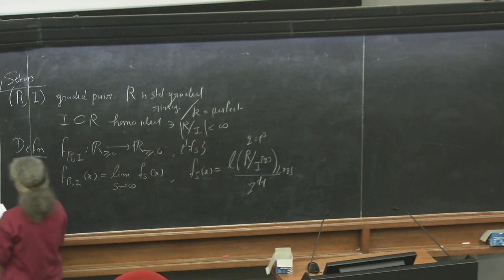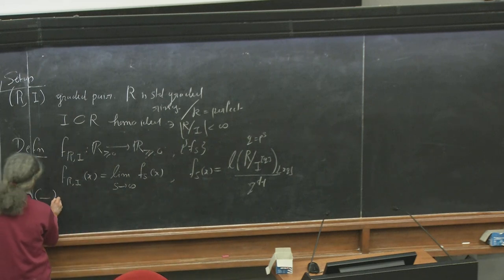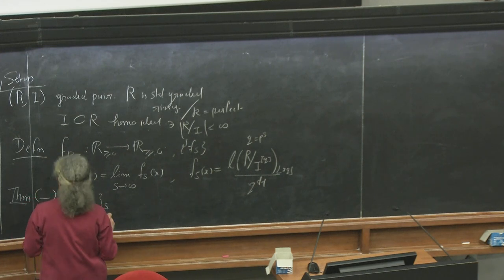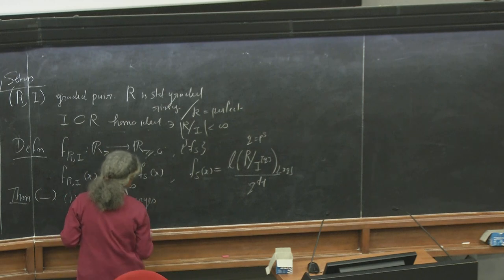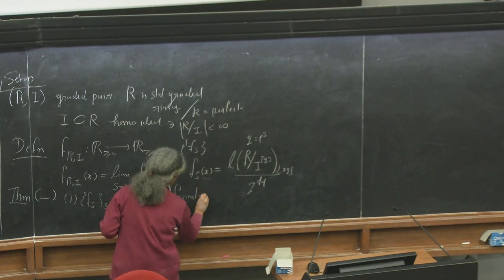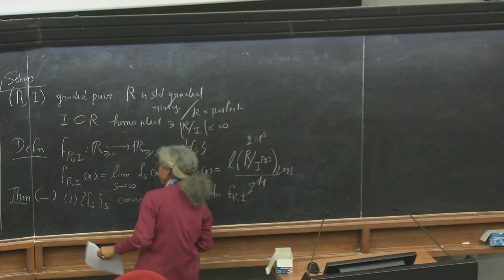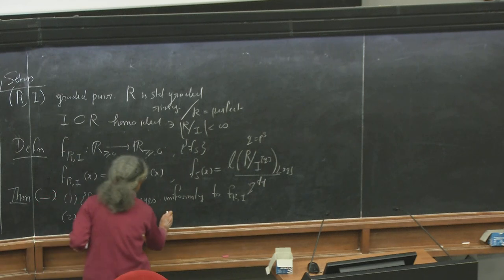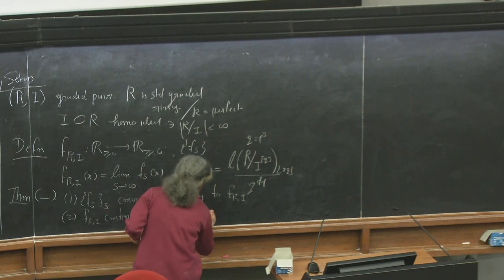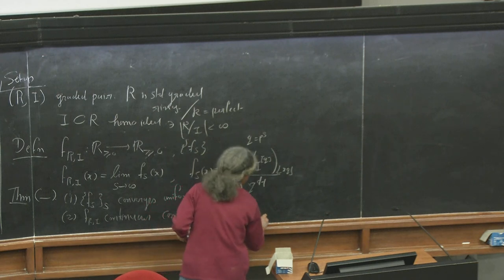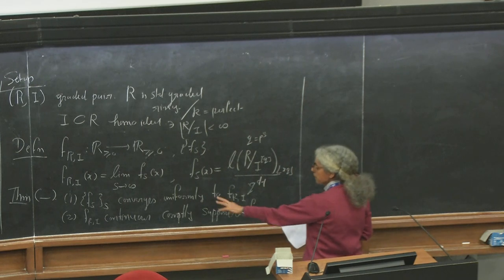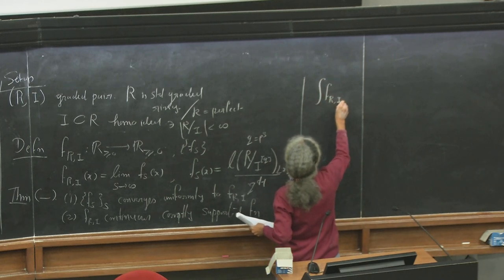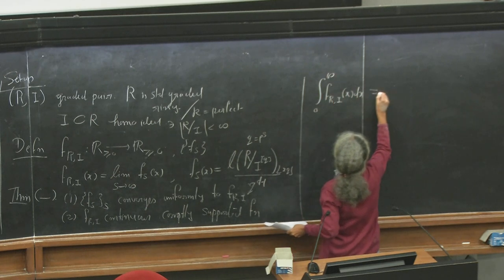There will be obvious questions: does this make sense? The key facts are: first, the sequence of step functions f_s converges uniformly to f_{R,I}, which is the HK density function; and second, the function f_{R,I} is a continuous, compactly supported function. Having these two properties, uniform convergence allows us to interchange the limit with the integral, so integrating this continuous compactly supported function gives the HK multiplicity.